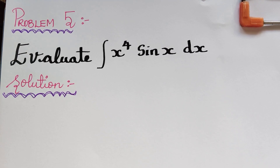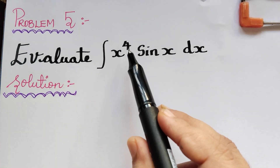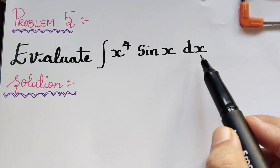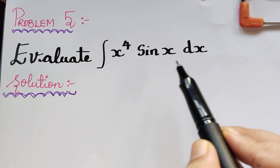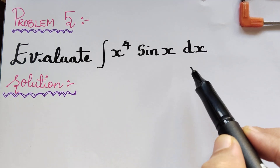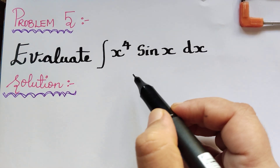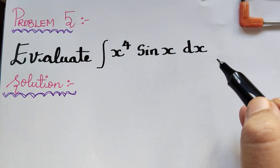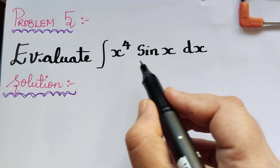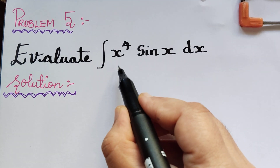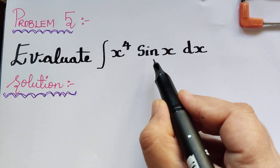Dear students, under the topic Bernoulli's formula of integral calculus, here we have problem 5. We need to evaluate the integral of x to the power 4 sin x dx. To evaluate this integral we apply Bernoulli's formula, for which we have to decide the function u and the remaining function as dv. We have a product of two functions: one algebraic and the other trigonometric.